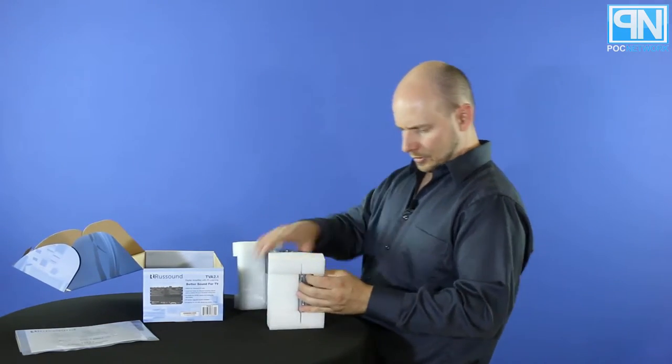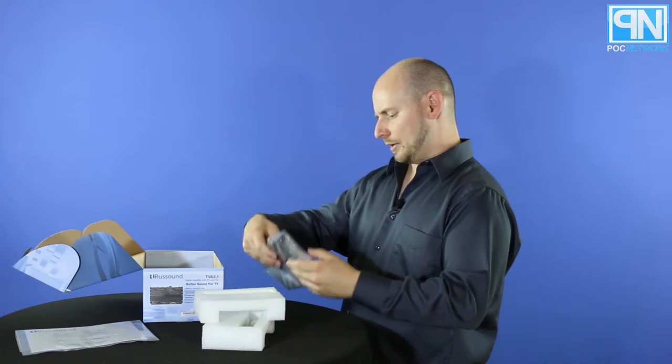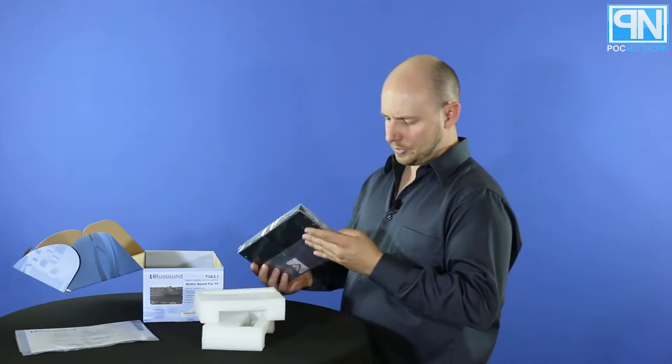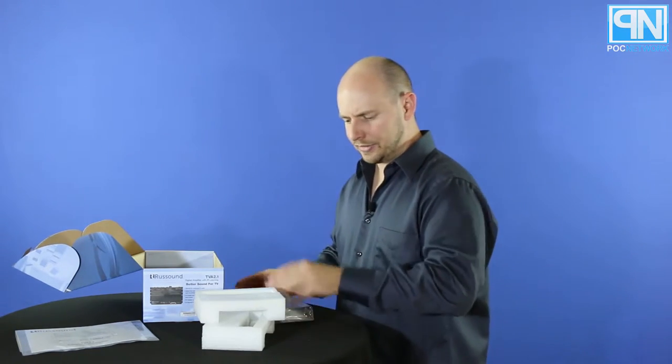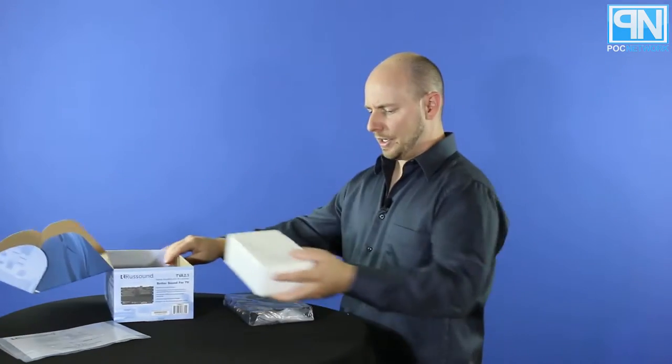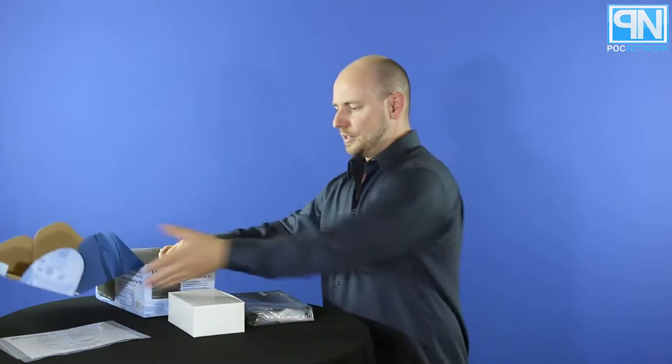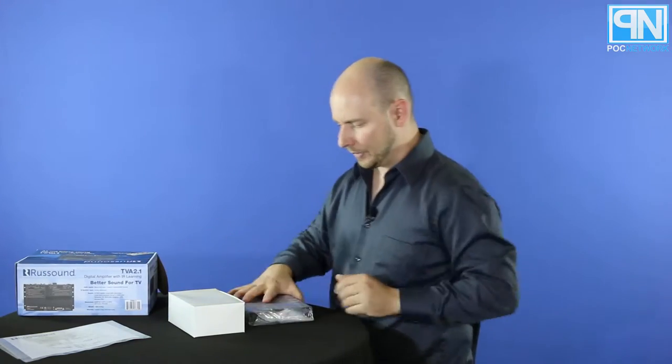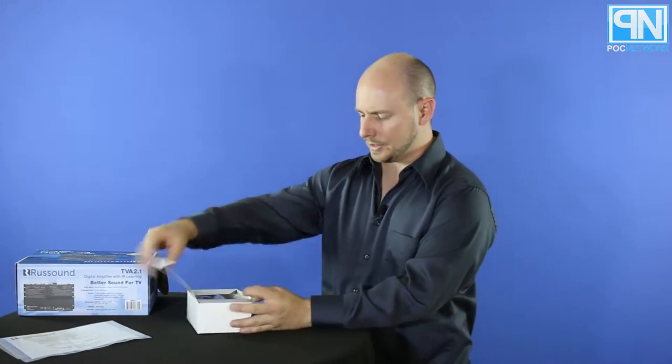You have the unit itself. I don't know if it will support the VESA mount on the TV, because the screw holes are a little bit far apart, but it depends on the TV, of course. So this is the unit itself right here, and then you have an accessory box.